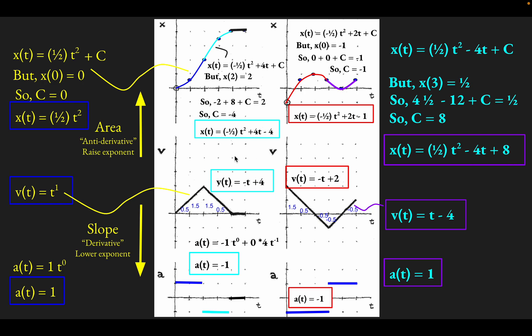So that's how you handle motion graphs. If you're going from position to velocity to acceleration, you'd take slopes or lower exponents. To go from acceleration to velocity to position — to go back up — you take areas or raise exponents. Hopefully that gives you a little introduction to motion graphs, maybe even a little introduction to calculus. Thanks for checking this out.